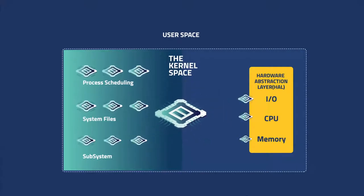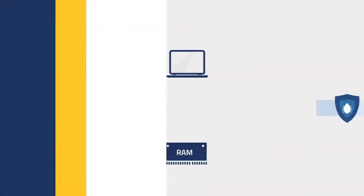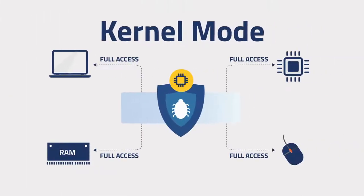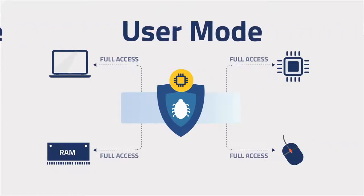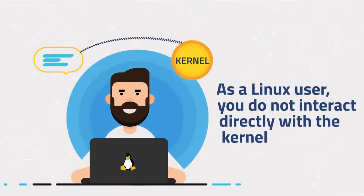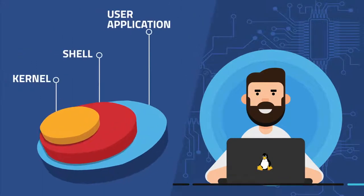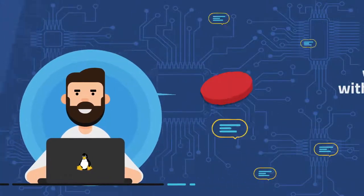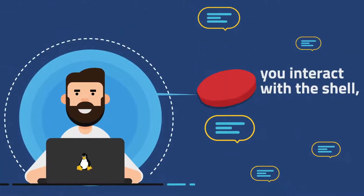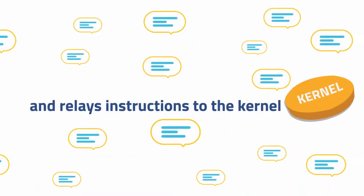In contrast, the user space is where all user actions take place — think using a text editor or running an internet browser. In the user space, all processes are isolated from one another, and if one process needs to interact with another, it must do so through the kernel.